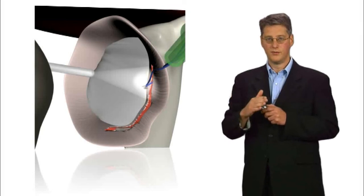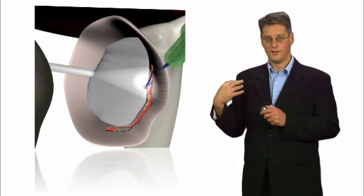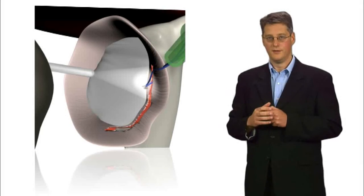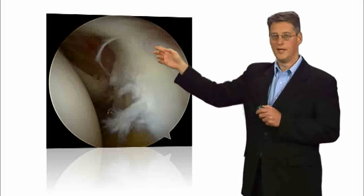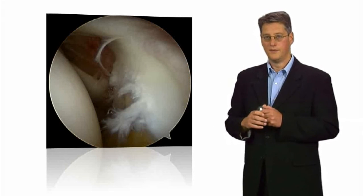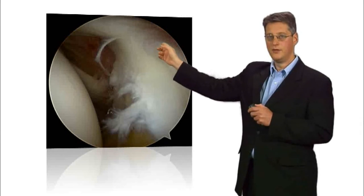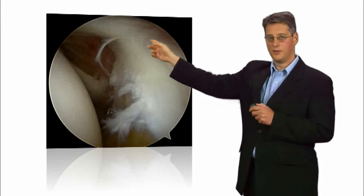This is done under general anesthetic or sometimes a regional anesthetic where your arm is made numb. Here you see a typical picture that we see at arthroscopy of a superior labral tear or SLAP tear at the top of the shoulder.